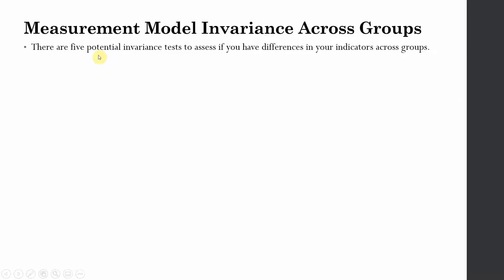There are five potential invariance tests to assess if you have differences in your indicators across groups. However, we are not going to look into all five — we are going to look into the two that are normally required by reviewers.